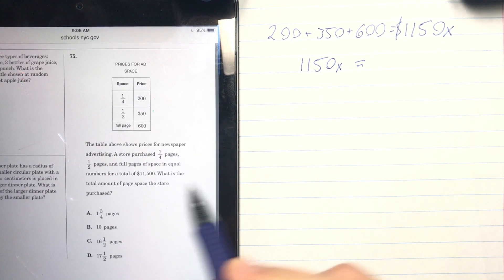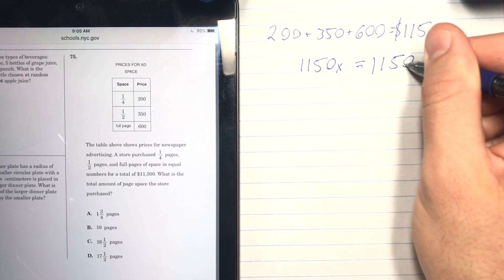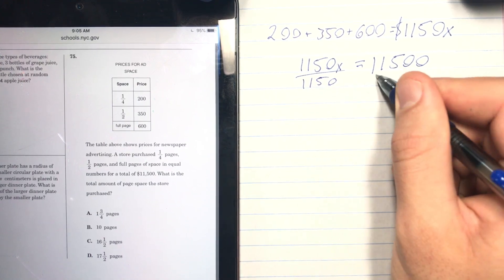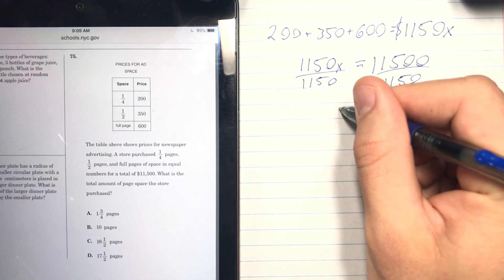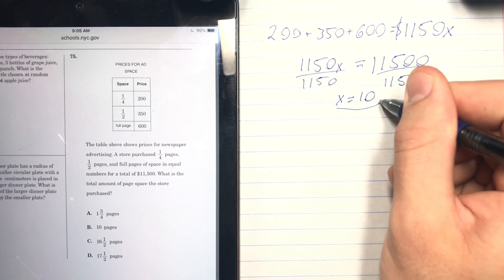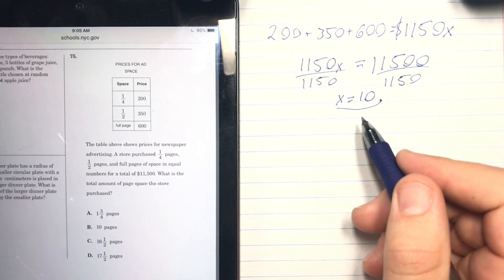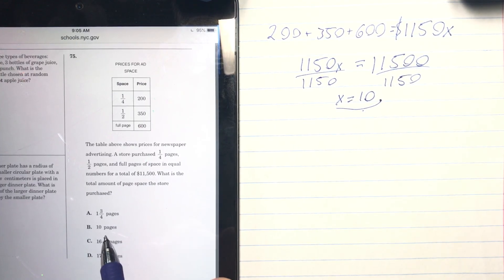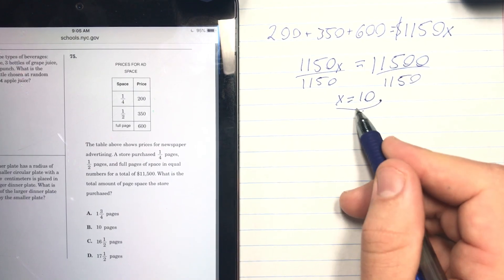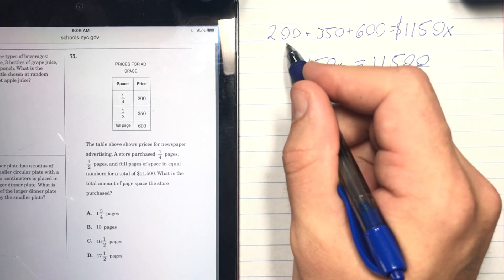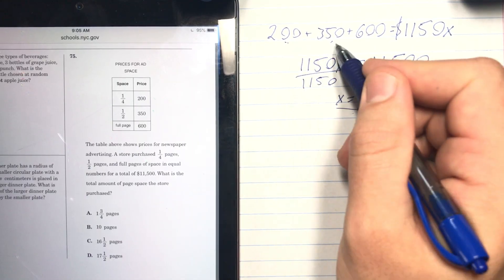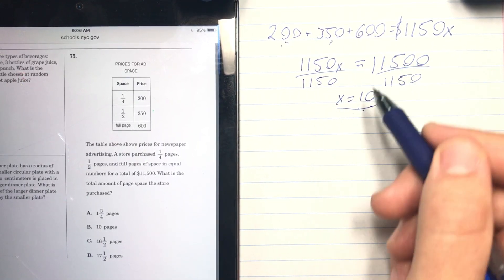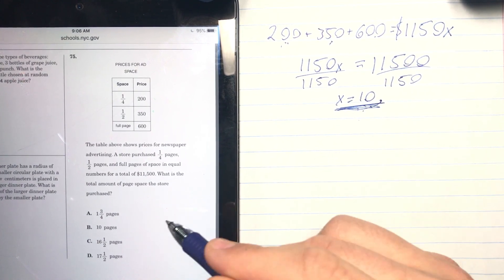We know that $1,150 times however many of those they bought needs to equal the total amount they spent, which is $11,500. So to solve this, I'm going to divide both sides by 1,150, and what x ends up equaling is 10. That's super important. Notice that they have 10 as a trick answer, but you're not done. You just solved for how many of each they bought. They bought 10 of these, 10 of these, and 10 of these. But the answer is not 10.